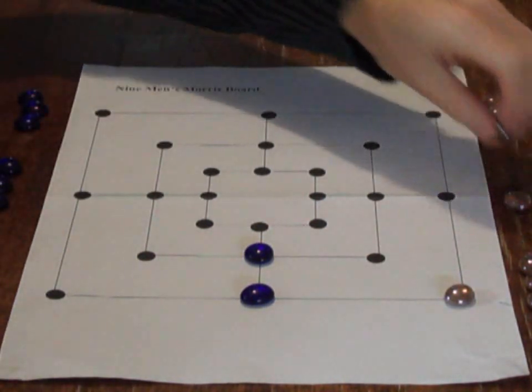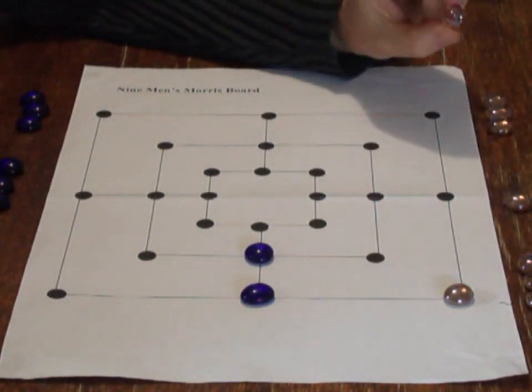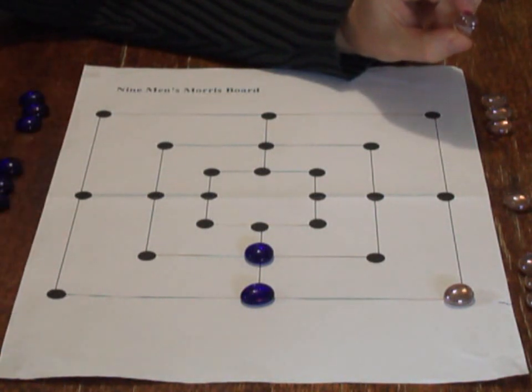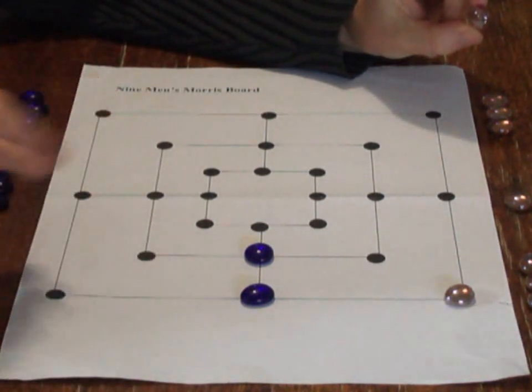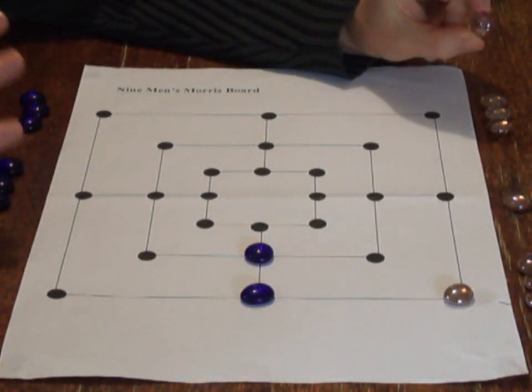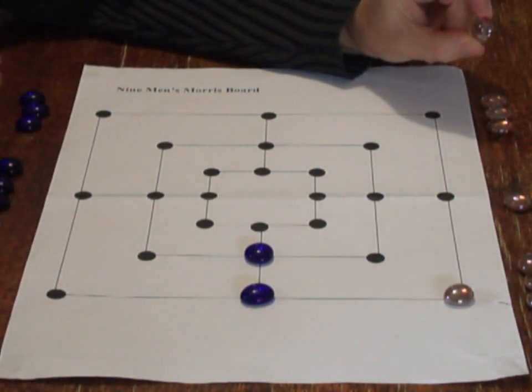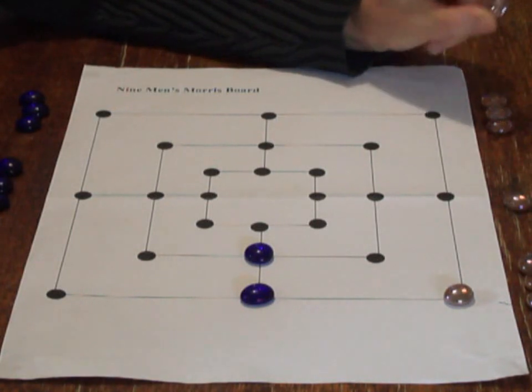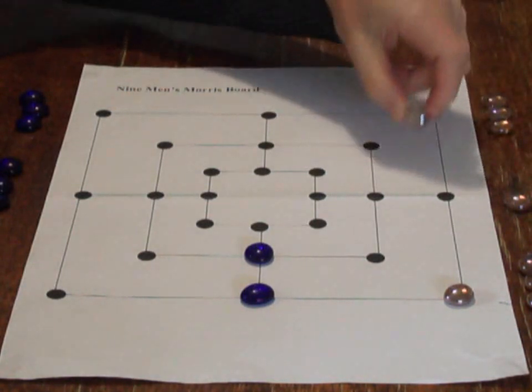Now, it's white's turn. Now what white has to watch out for is the next rule of the game, which is any time blue were to make three pieces in a line, they would be able to take one of white's pieces off. So, if white, for instance, goes here,